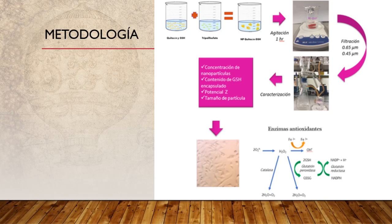Después de una hora de agitación, se filtra a través de una membrana de 0.65 micras para quitar las partículas muy grandes o aglomerados de nanopartículas. Posteriormente, se filtra por 0.45 micras en condiciones estériles. Nos hemos dado cuenta de que con ese tamaño de partícula es suficiente para poder trabajar en nuestros cultivos celulares y tener un sistema de nanopartículas estéril.